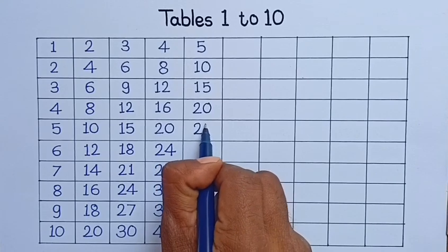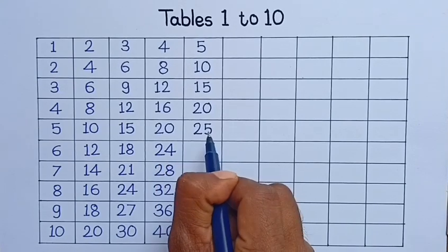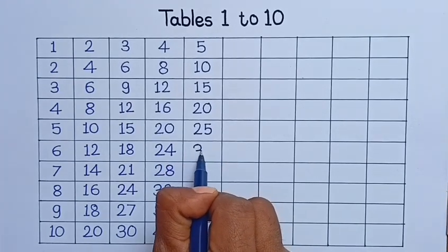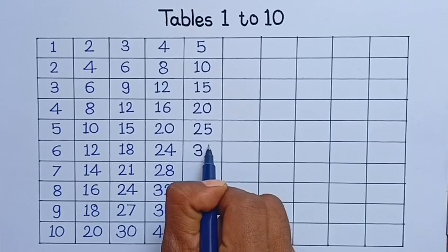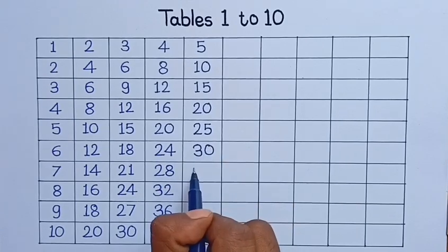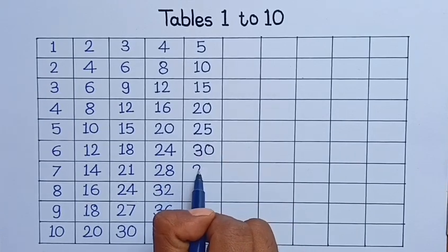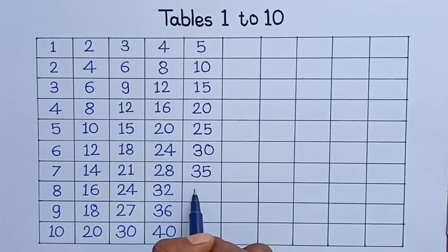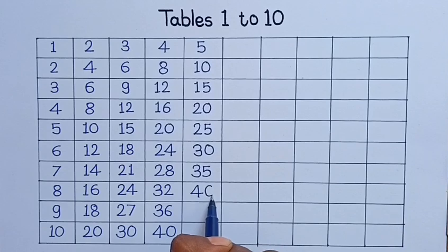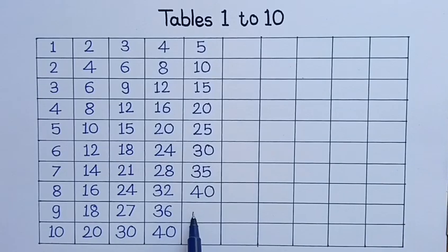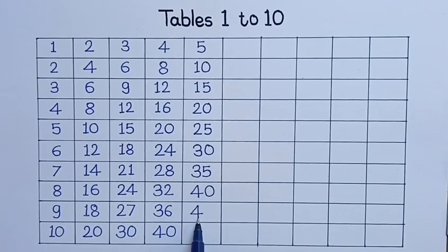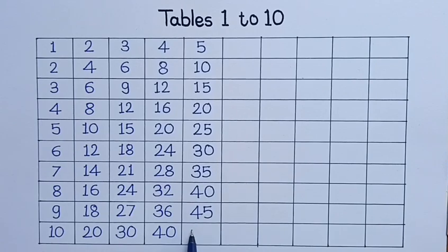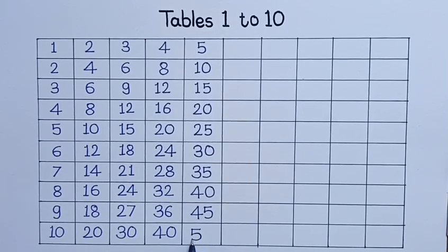5, 6 the 30. 5, 7 the 35. 5, 8 the 40. 5, 9 the 45. 5, 10 the 50.